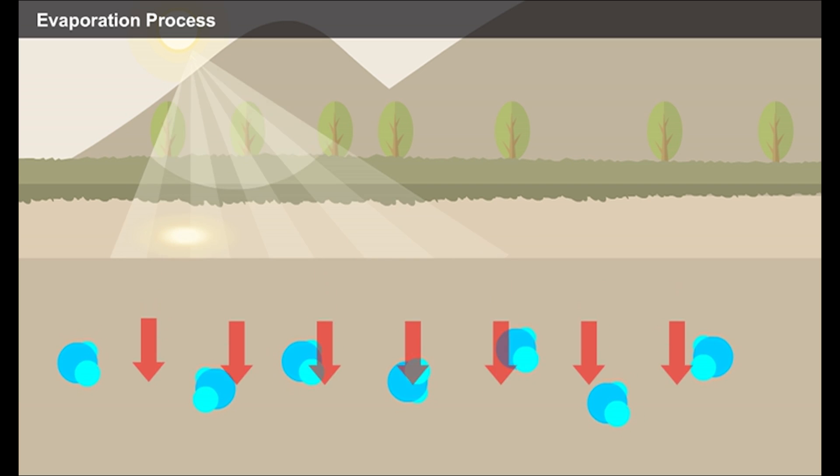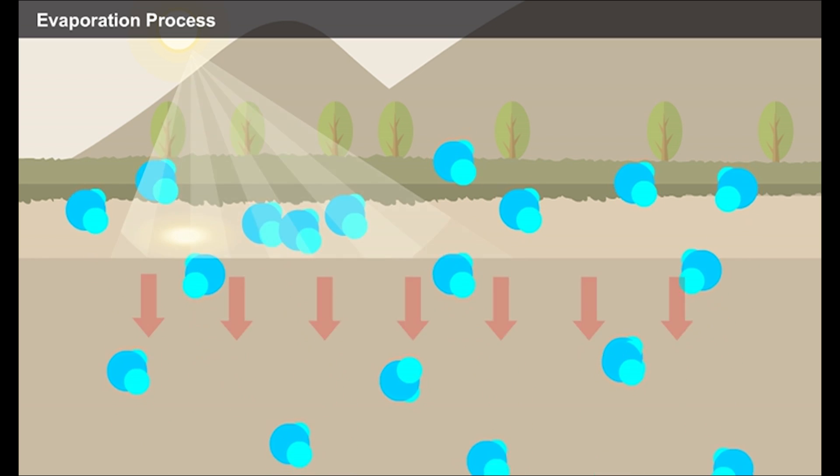Thus, the water molecules gain momentum and begin to move here and there. Once the water molecules gain enough kinetic energy, they tend to escape into the atmosphere, breaking down the intermolecular forces. Upon constant supply of heat energy, this process continues and the water molecules get accumulated above the water surface.